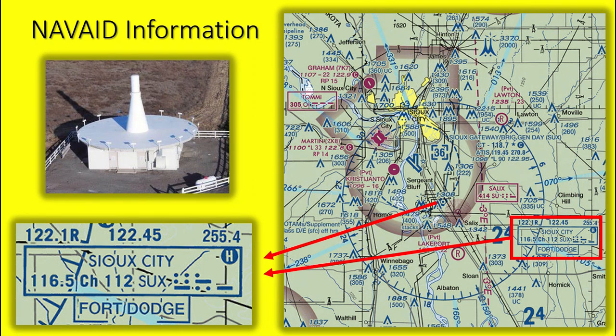Channel 112 denotes the TACAN channel. However, the T-6 is not outfitted with a TACAN receiver, but most Air Force aircraft are. Right of the identifier, you see the Morse code dots and dashes for the letters SUX. The frequencies above the NAVAID box and the name below it will be covered in part three of this video series.